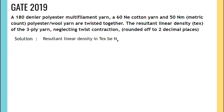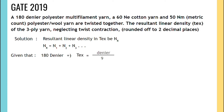direct count system, so the formula is Nr = N1 + N2 + N3. Given that 180 Denier, we have to convert to Tex: Tex = Denier ÷ 9, so 180 ÷ 9 = 20 Tex.